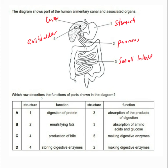So which option describes the functions of the parts shown? Part 1 being the stomach — that is where proteins are digested. Part 3 being the small intestine — the small intestine will only absorb the end products. So that is true.